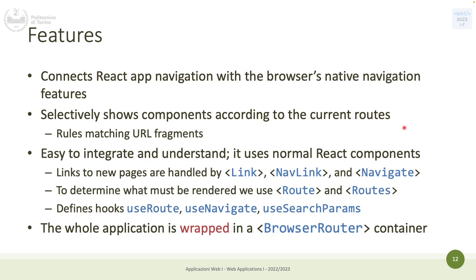React Router features: it connects app navigation with browser navigation, shows components according to the current URL, and works mostly with React components and hooks. However, we need to define links not with the standard HTML `<a>` tag but with a special component called Link. Why can't we use `<a href>` but instead need to use the React Router Link component?